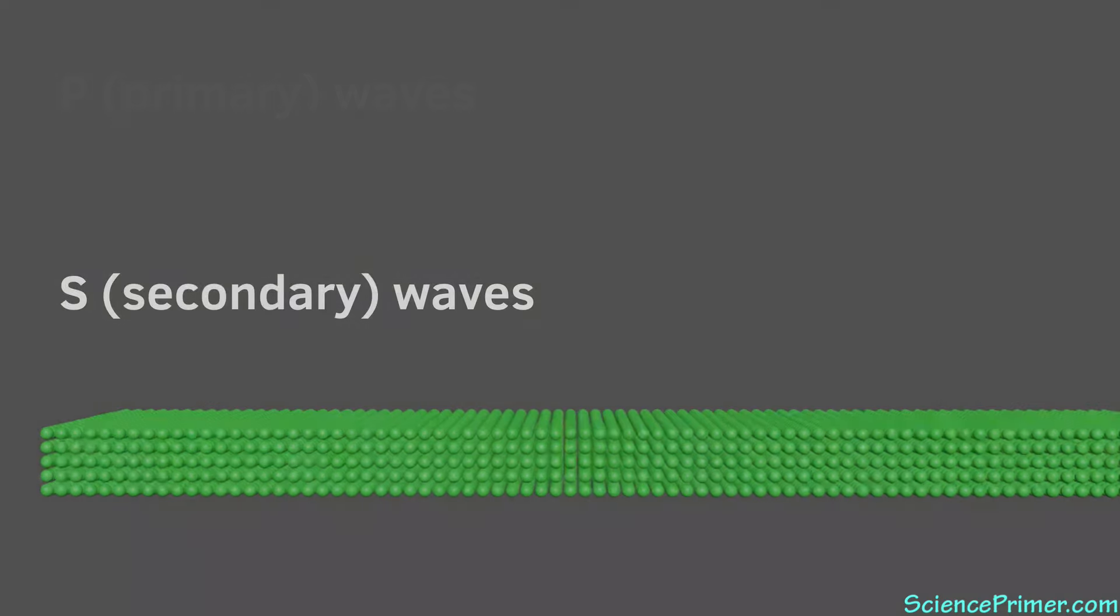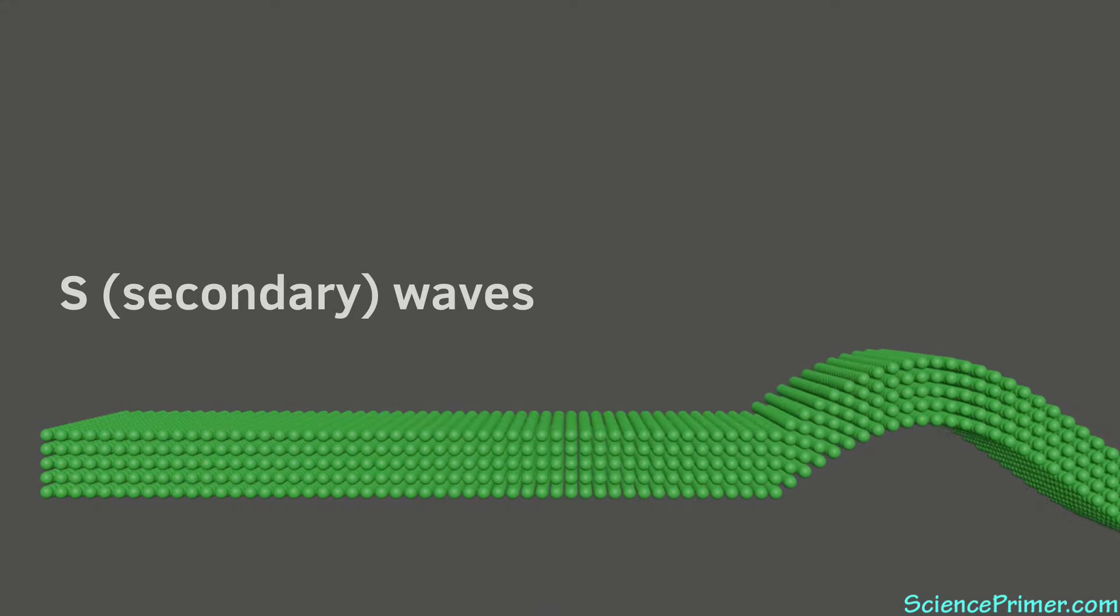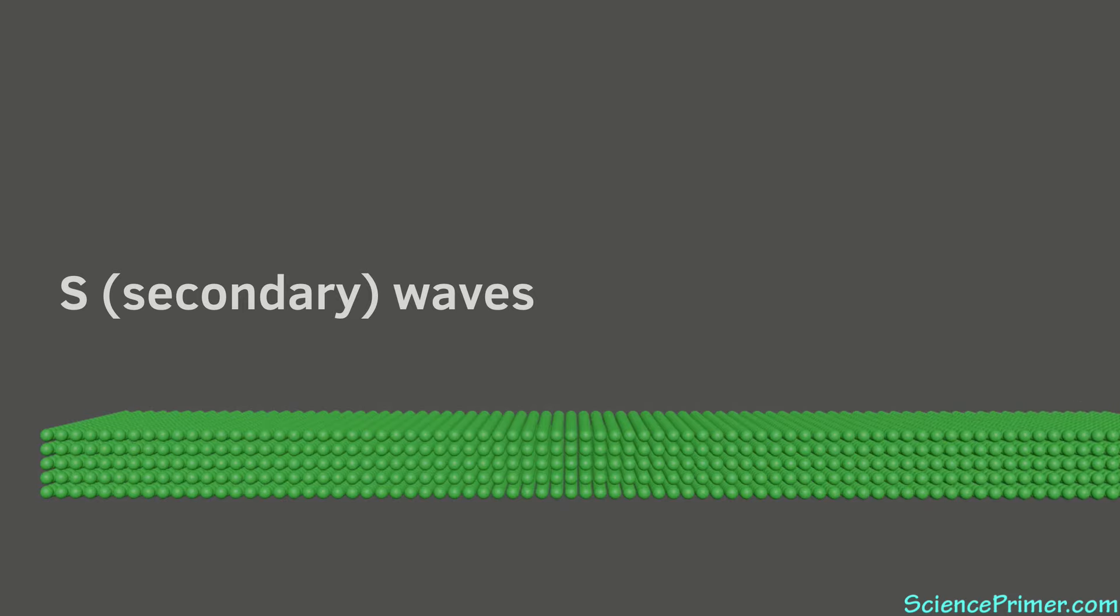S waves, sometimes called shear waves, are transverse waves in which particle motion is at right angles to the direction the wave propagates. This is similar to the motion of a wave along the length of rope that has just been snapped.